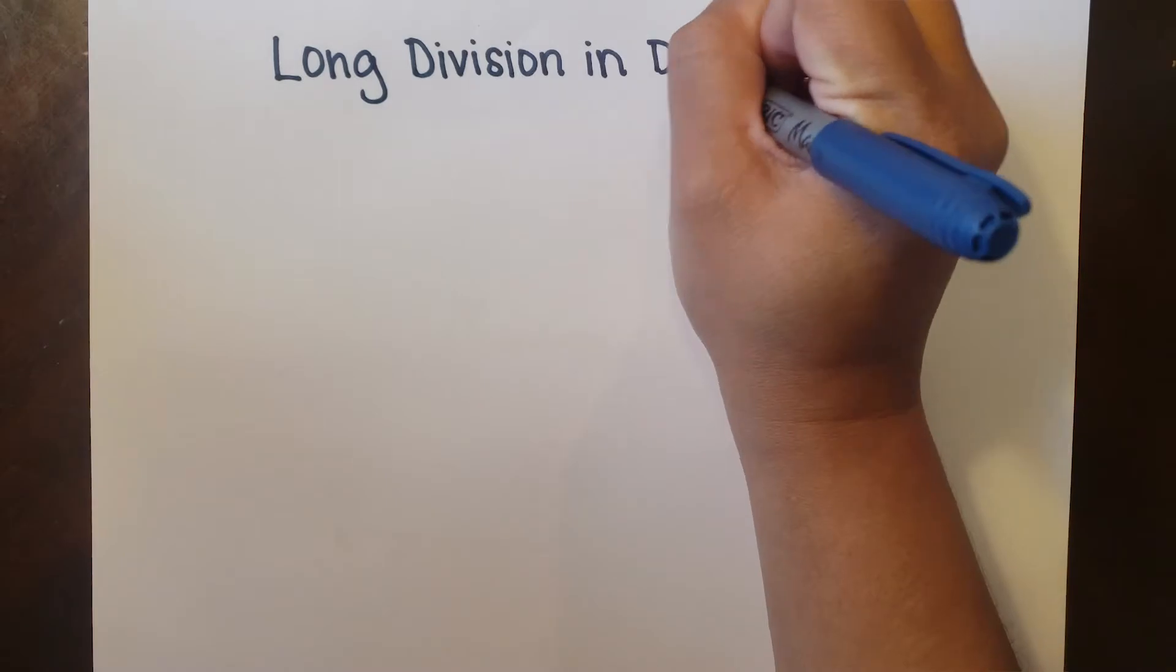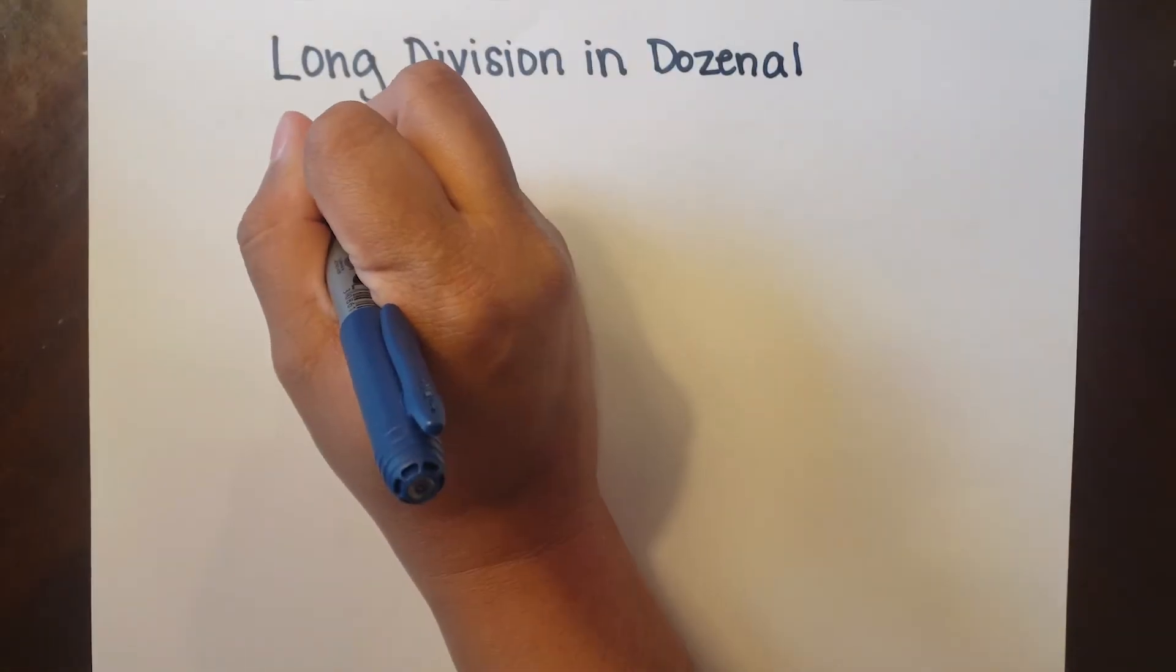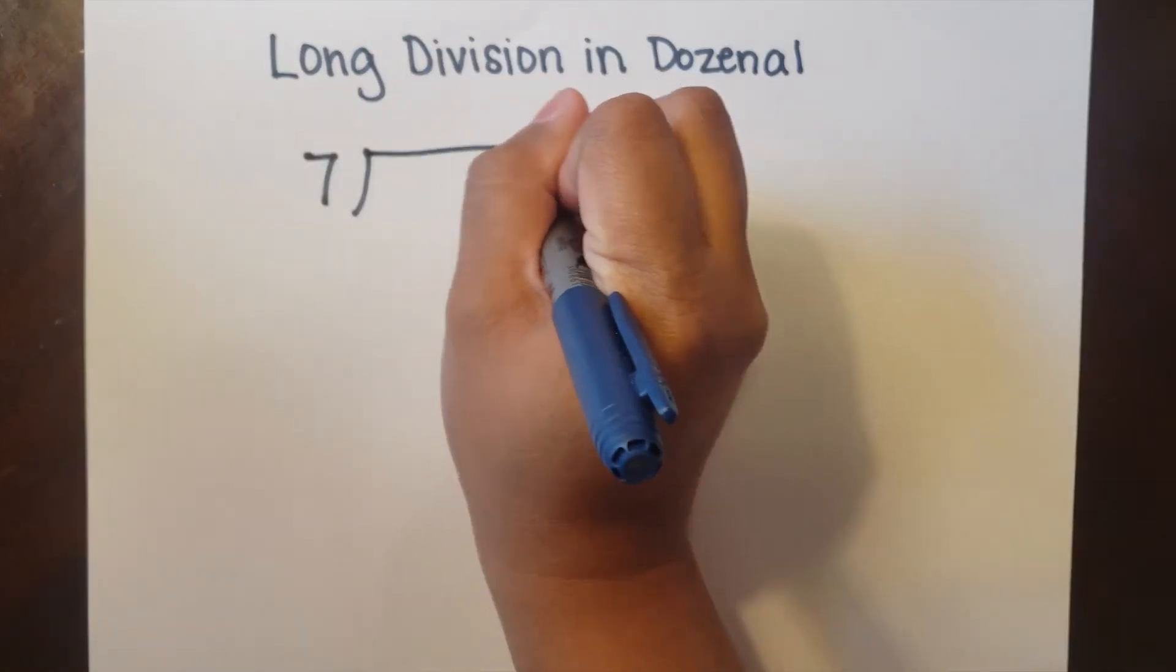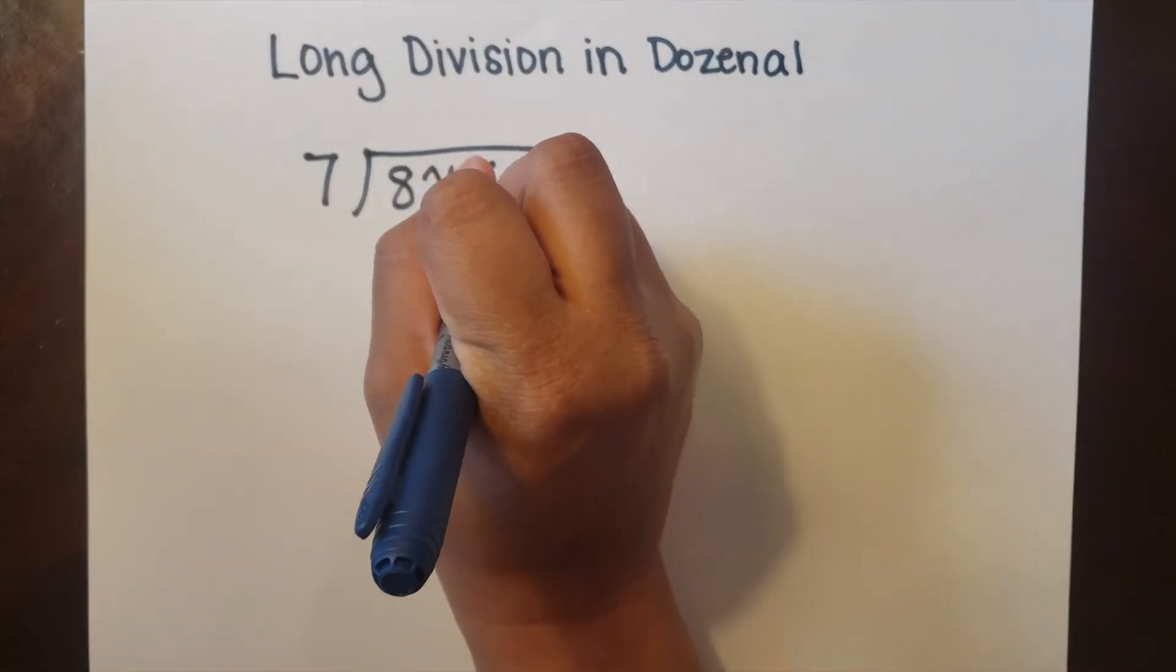Now let's look at an actual long division problem. I'm gonna start with eight grow, deck doe, five, and I'm gonna divide it by seven.